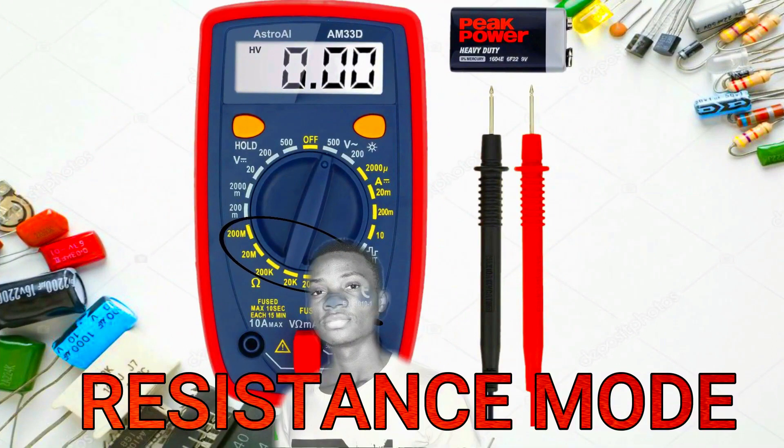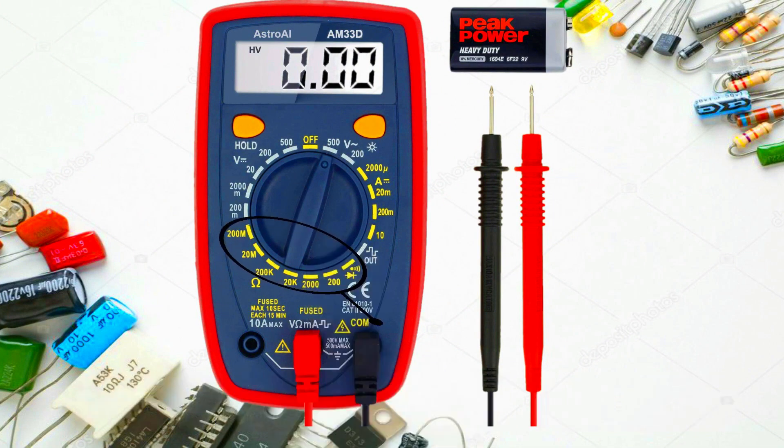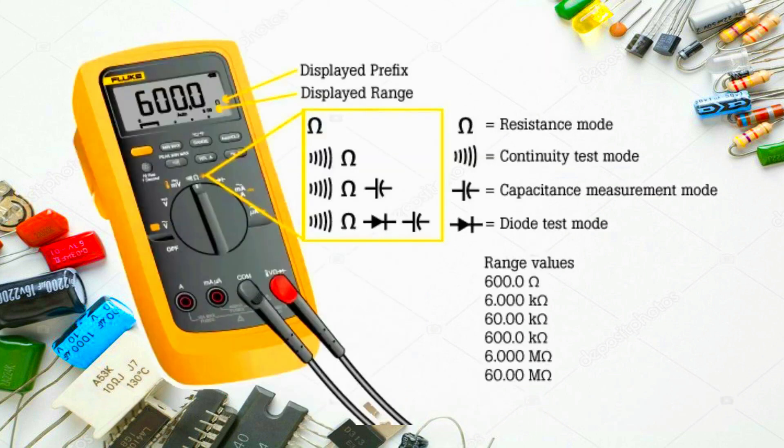Let's start with resistance. Take a good look at the resistance section. You can call it ohms section. In the resistance section, we have four different types of ohms measurements: resistance mode, continuity mode, capacitance measurement mode, and diode test mode.